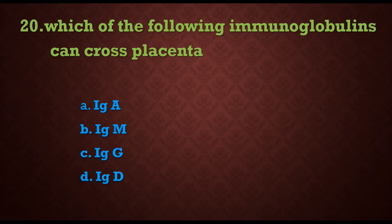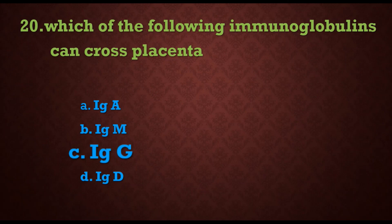Question 20: which of the following immunoglobulins can cross the placenta? Options are: a) IgA, b) IgM, c) IgG, d) IgD. The answer is c) IgG. IgG passes from the mother to the fetus through the placenta. If it is through breast milk (colostrum feeding), then it will be IgA. The earliest immunoglobulin developed by the fetus is IgM. This concludes the first series; the second series will cover questions 21 to 40. Thank you.